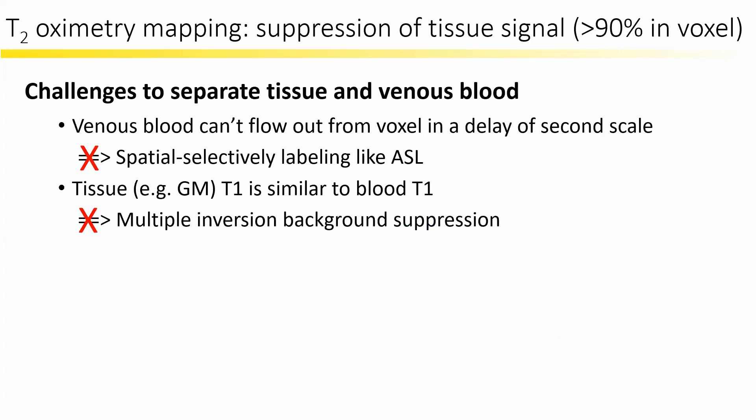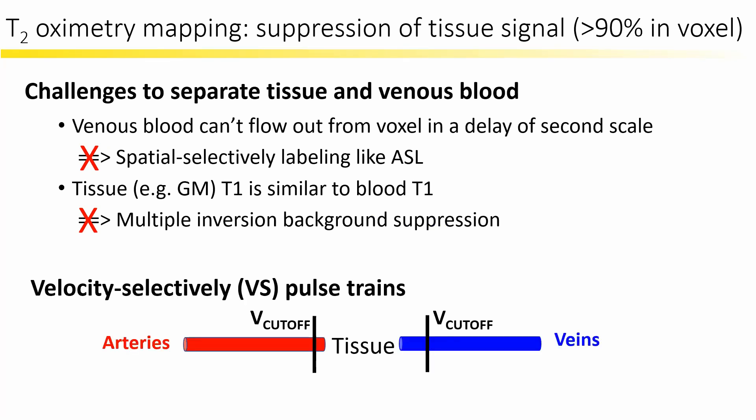To separate tissue and venous blood, venous blood has a slow flow rate, and a delay of a few seconds is not enough to achieve good spatial separation using spatially selective labeling like ASL. Also, gray matter has a similar T1 to blood, so multiple inversion background suppression cannot be used. However, tissue and blood have a significant velocity difference, and velocity selective pulses with proper cutoff velocity can effectively separate tissue and blood.